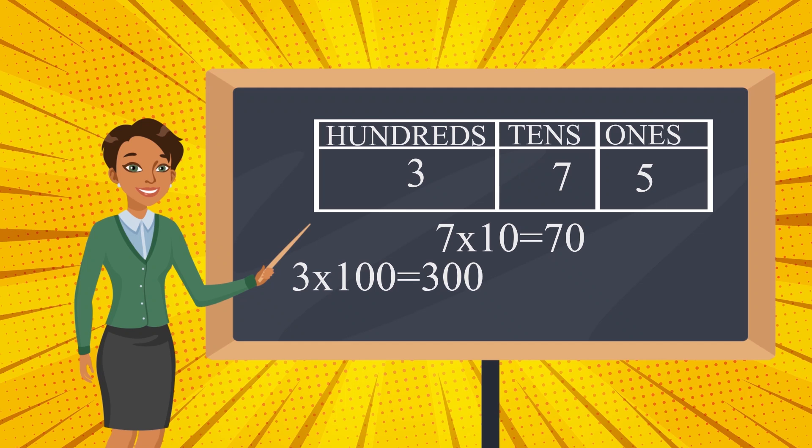And, the place value of 5 will be 5. Once we have 5 ones is 5. So, the place value of 5 will be 5.